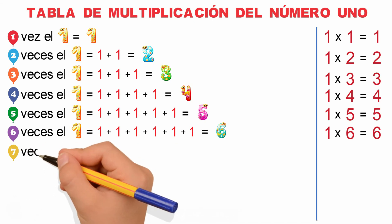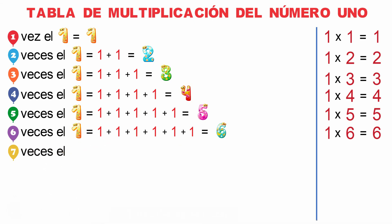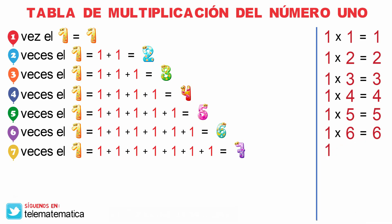7 veces el 1 es igual a 1 más 1 más 1 más 1 más 1 más 1 más 1 es igual a 7. Y escrito como una multiplicación sería 1 por 7 es igual a 7.